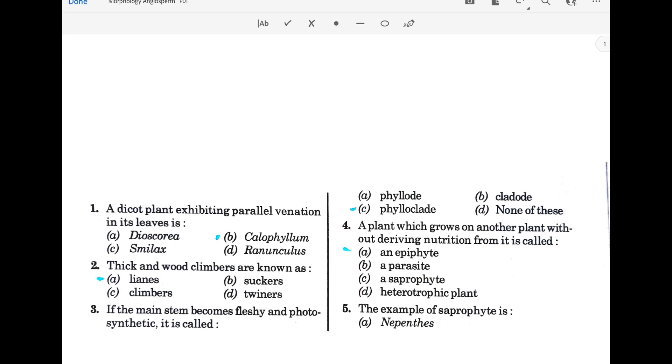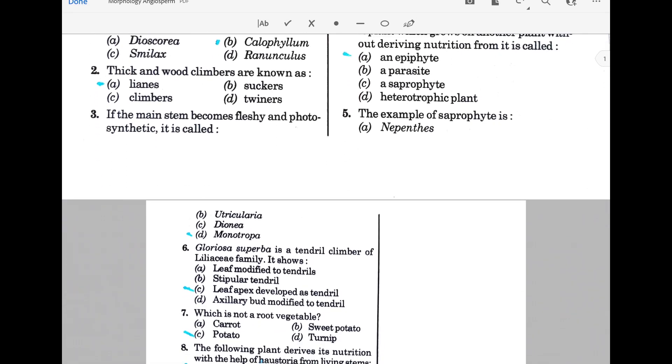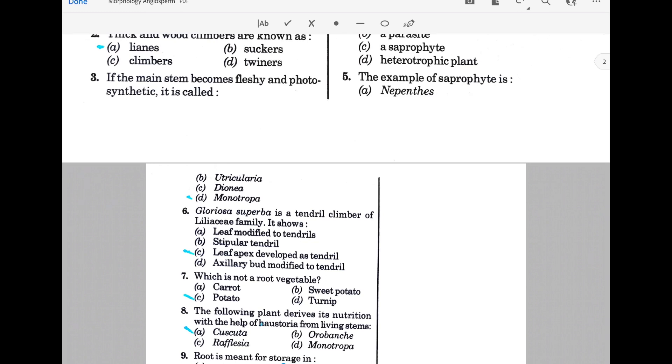A plant which grows on another plant without deriving nutrition from it is called an epiphyte. The example of a saprophyte is Monotropa. Gloriosa superba is a tendril climber of Liliaceae family showing leaf apex developed as tendrils.